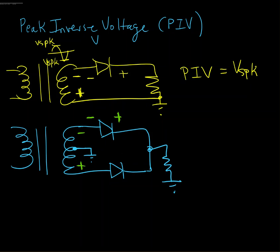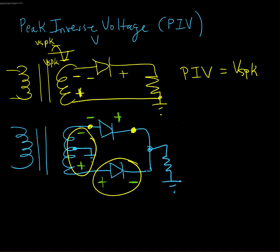In terms of Kirchhoff's voltage law, we also have a drop across the other diode. The voltage across the top diode that's reverse biased is the voltage between those two nodes. By KVL, this voltage minus that voltage equals the diode voltage, since the sum of voltage drops around the loop must equal zero. So the PIV for this circuit is the secondary peak voltage minus the diode drop of the conducting diode.